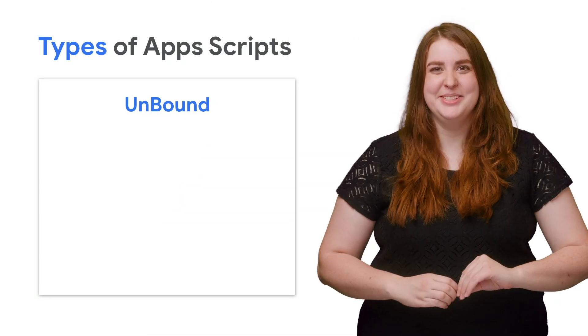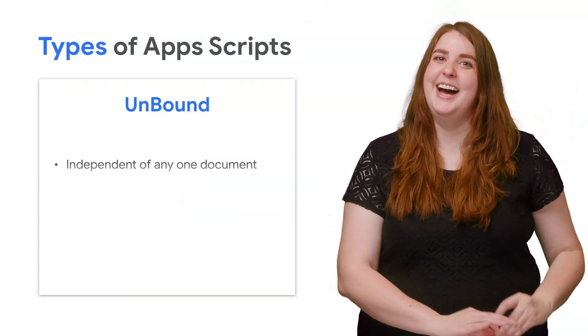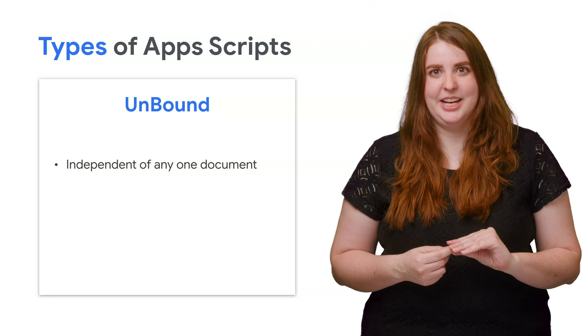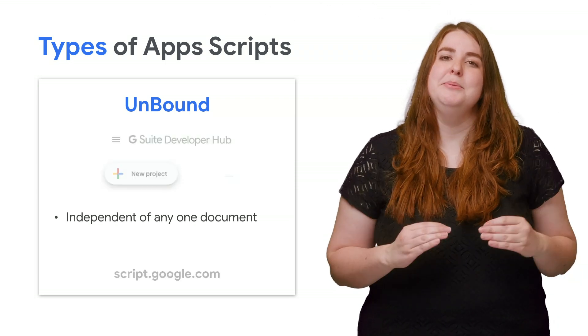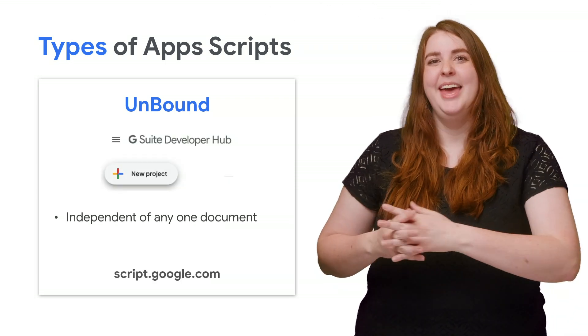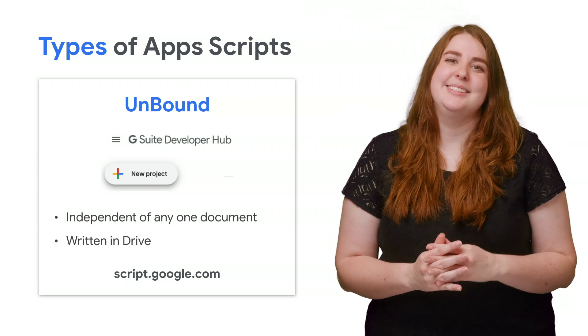Moving on, an unbound script, on the other hand, is a script that is not attached to any form of Google document. You can create these types of scripts by visiting scripts.google.com, and as you save them, they will appear as files in your Google Drive.